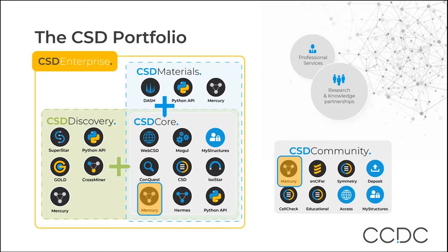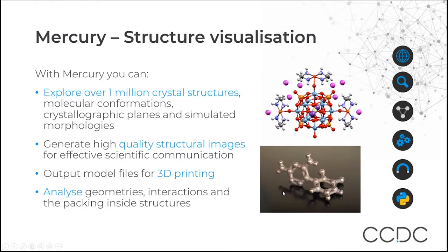This module explores the basics of Mercury, so it can be completed using either version. With Mercury, you can explore over 1 million crystal structures available in the CSD. You can look at molecular conformations and things like crystallographic planes and morphologies. It enables you to generate high quality structural images for effective communication, or output model files for 3D printing. It's also a great tool for analysis — you can analyse geometries, interactions and the packing inside structures.